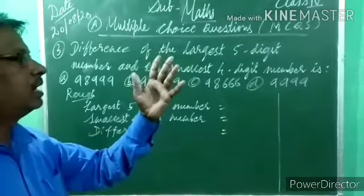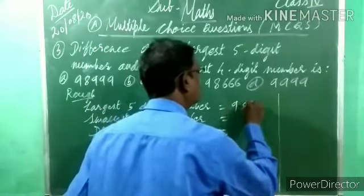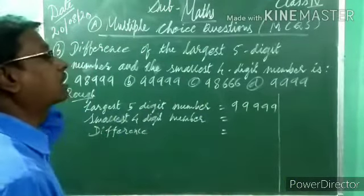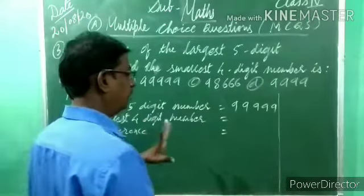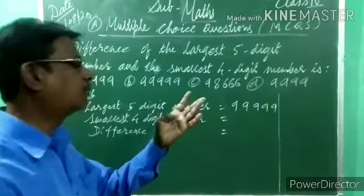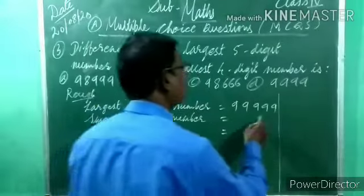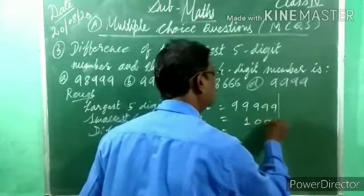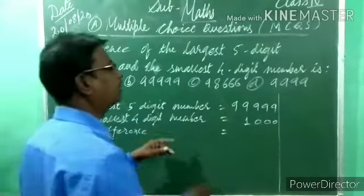Largest five-digit number: nine written five times — 99,999. Smallest four-digit number: one followed by three zeros — one thousand (1,000). Now do difference: 99,999 minus 1,000.